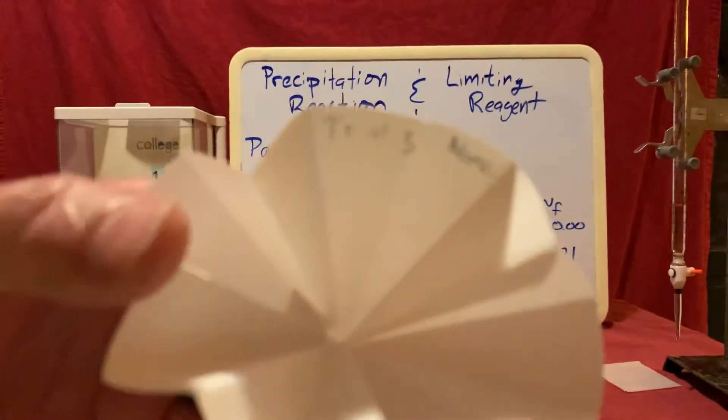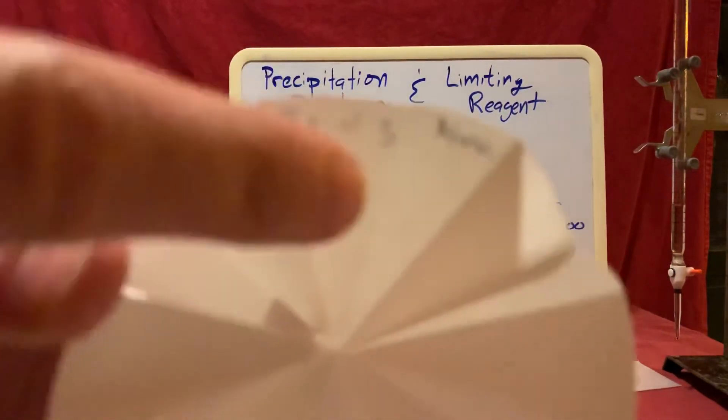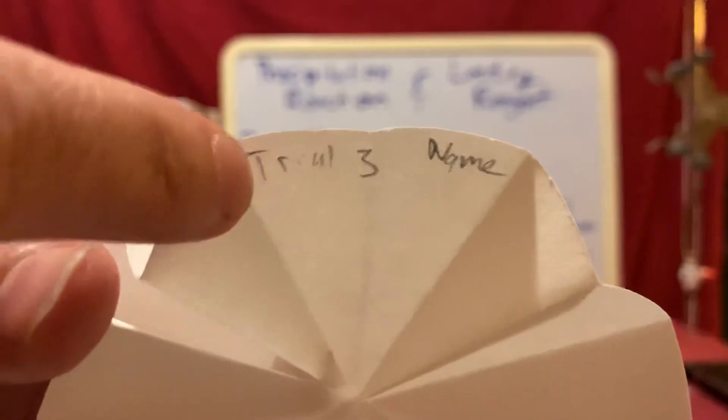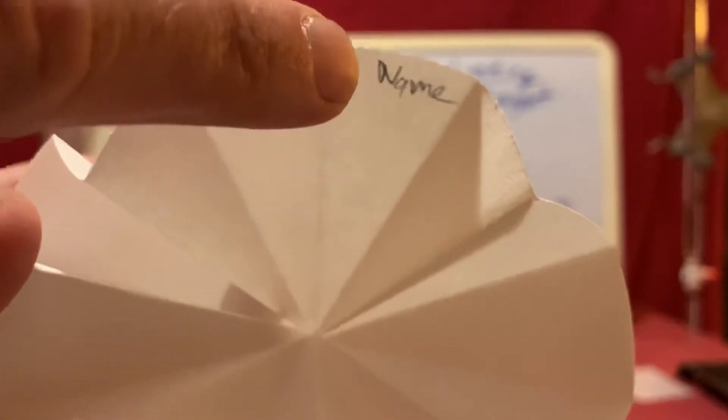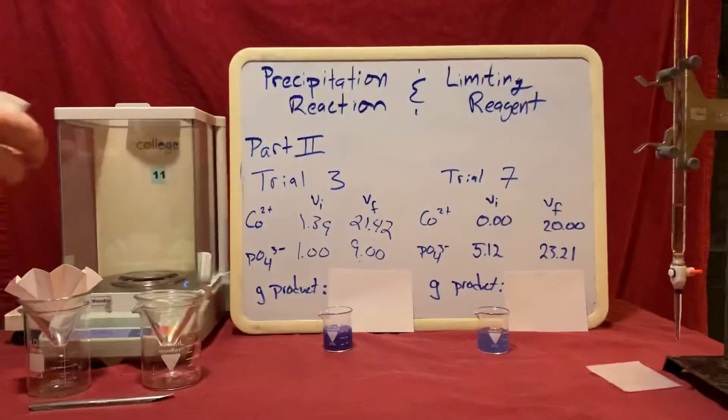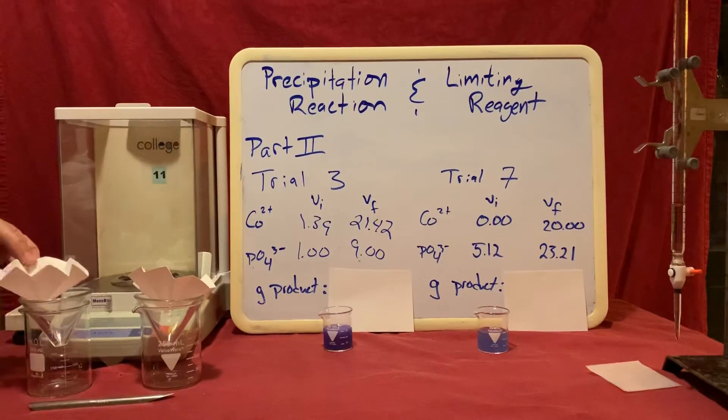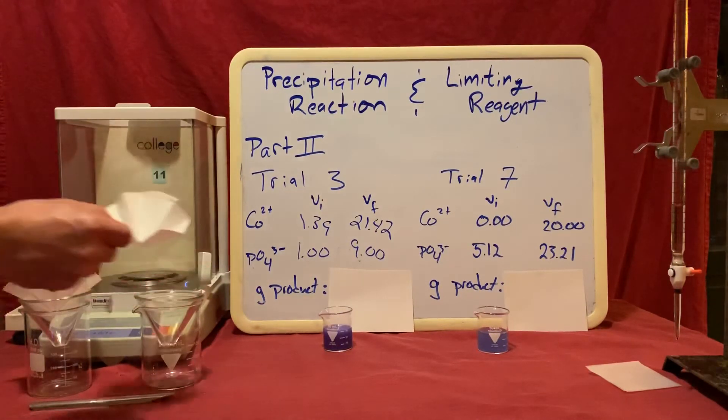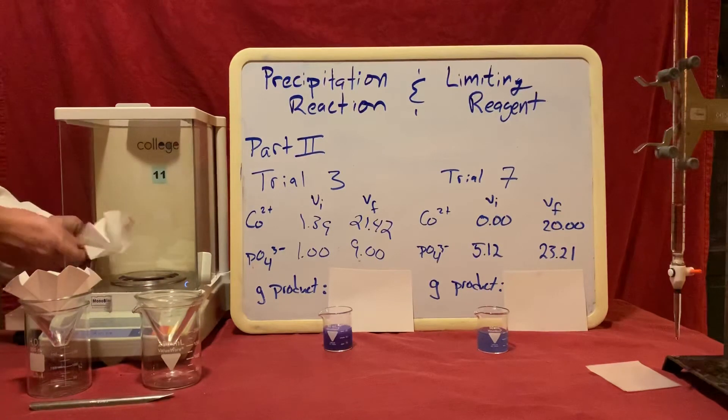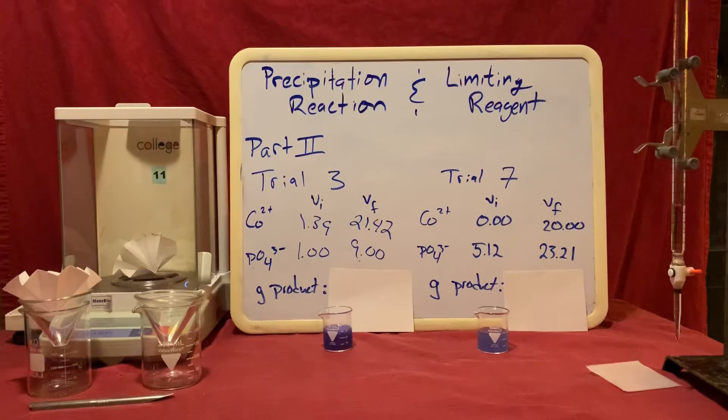I've also placed the trial number here, trial 3, along with my name or your name. I've done the same with a piece of filter paper for trial 7. Prior to pouring anything in, I will get the mass of each one of these filter papers and record that in my notebook.